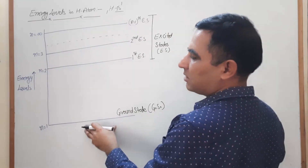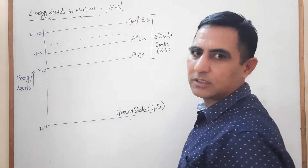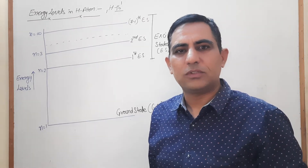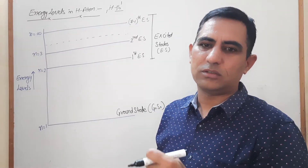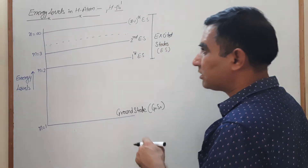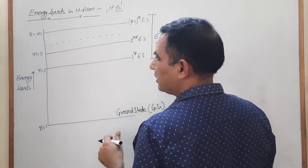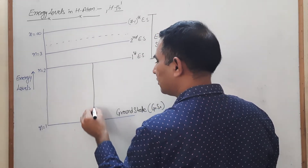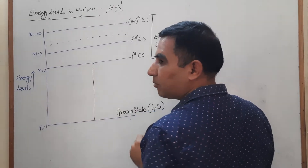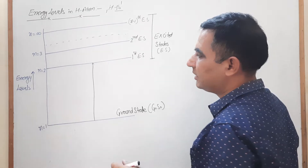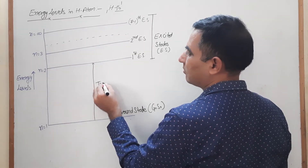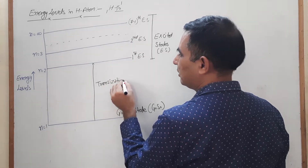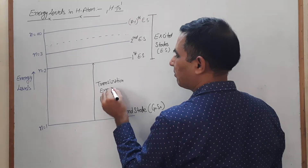When an electron moves from the first energy level to another energy level, it requires some amount of energy, which is absorbed by the electron. When a transition takes place from the first orbit to the second orbit, the amount of energy required is known as the transition energy.